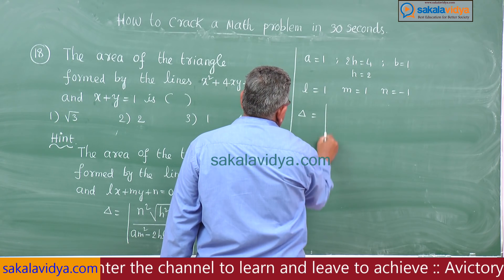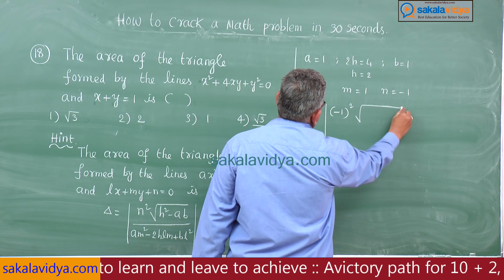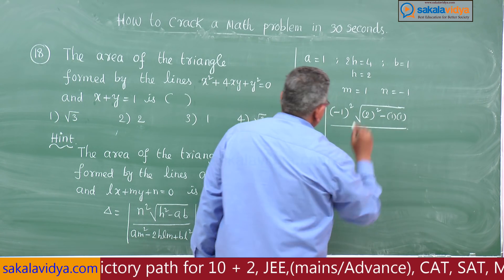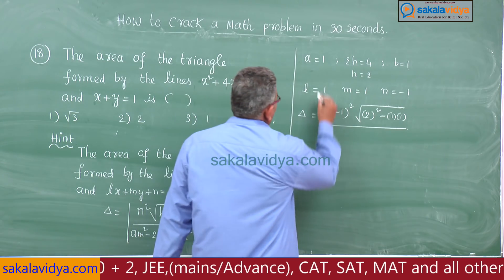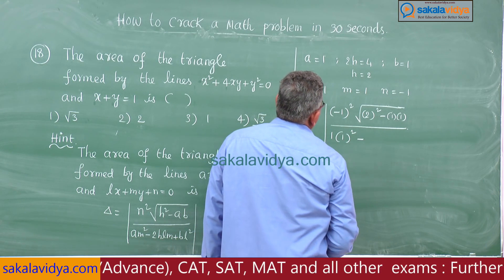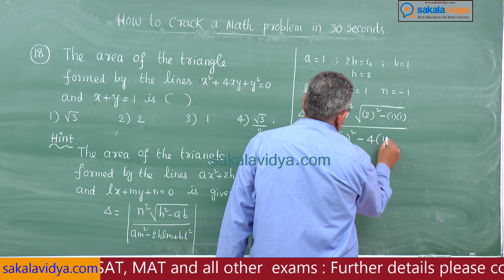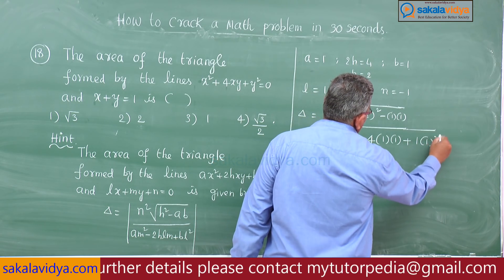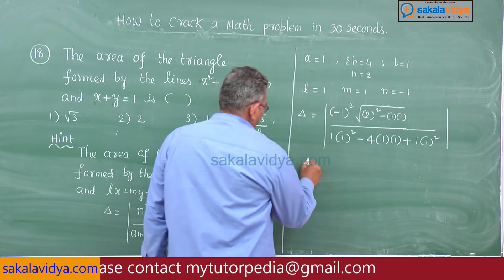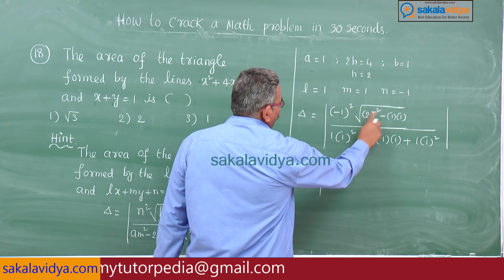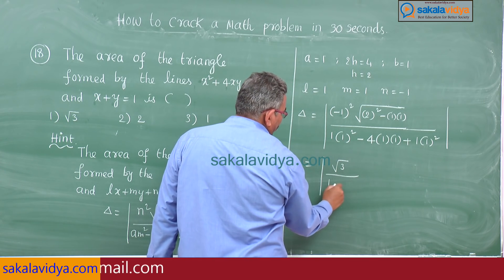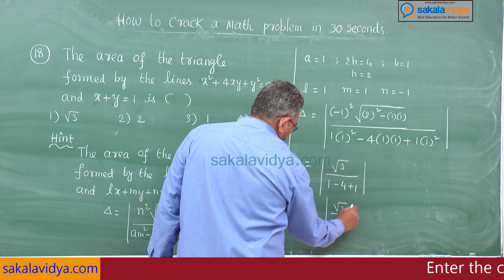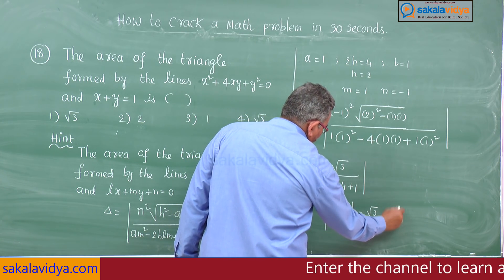Now delta = |n²√(h² − ab)| / |am² − 2hlm + bl²| = |(−1)²√(4 − 1)| / |1(1) − 2(2)(1)(1) + 1(1)| = |√3| / |1 − 4 + 1| = √3 / 2 square units. So the fourth option is the right answer.